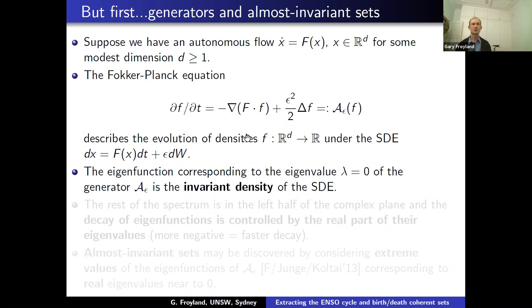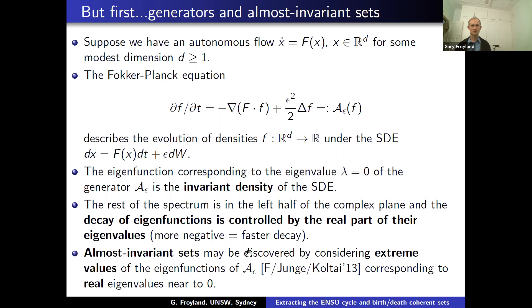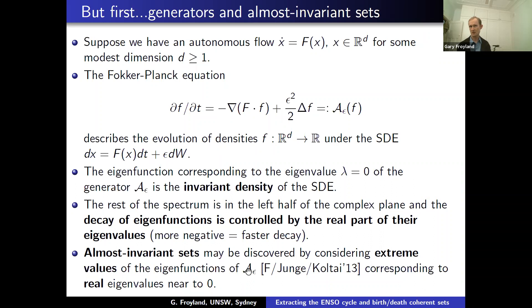I'm more interested in the rest of the spectrum and the corresponding eigenfunctions — primarily the ones close to the imaginary axis. The spectrum of this operator is contained in the left half of the complex plane; the more to the left, the faster the decay. It's fitting that Michael was here, as he was one of the progenitors of almost invariant sets. An extension of his work — with Oliver Jung and Peter Koltai in 2013 — looked at the continuous-time case, showing that extreme values of eigenfunctions of A-epsilon for eigenvalues near the imaginary axis tell you where almost invariant sets are.